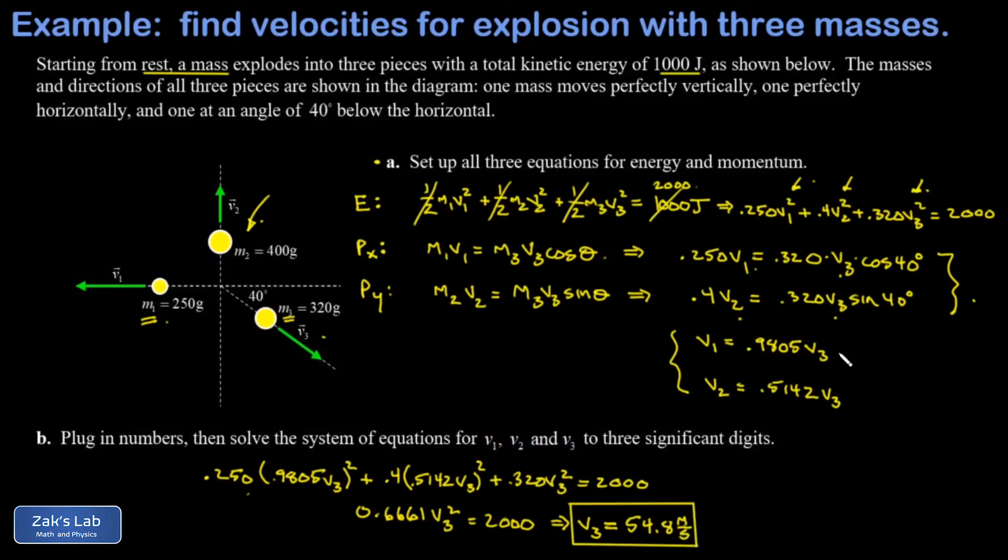Now it's simple to find v1 and v2. I just go and plug v3 into these two equations that I simplified and solved for v1 and v2. So v1 is 0.9805 times 54.8. This gives me 53.7 meters per second. And v2 is 0.5142 times 54.8. This gives me 28.2 meters per second. And I'll just pop those into the diagram real quick. V1 is 53.7, V2 is 28.2, V3 is 54.8.